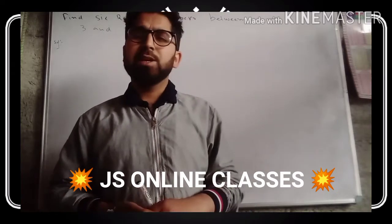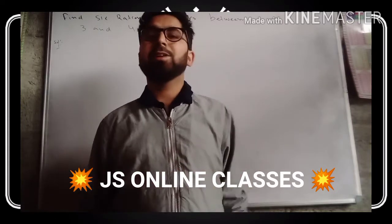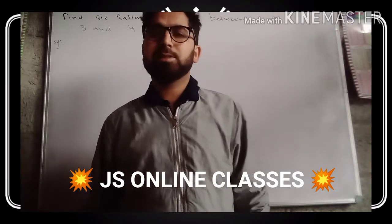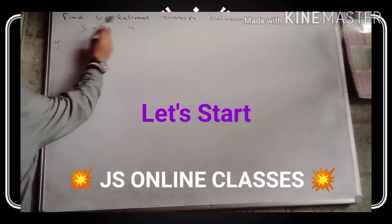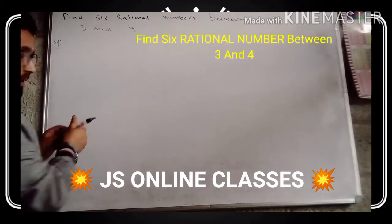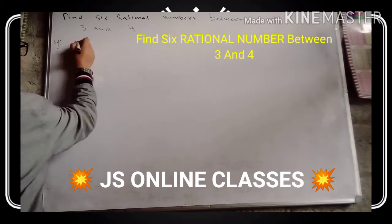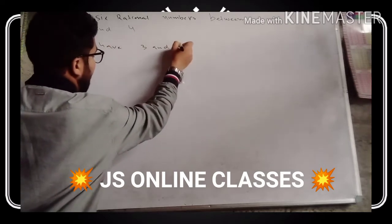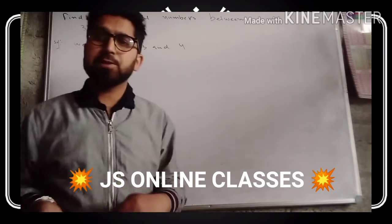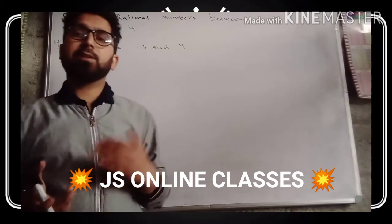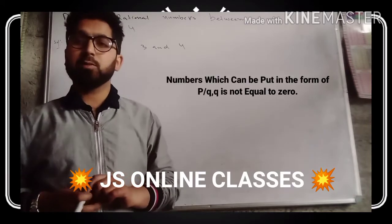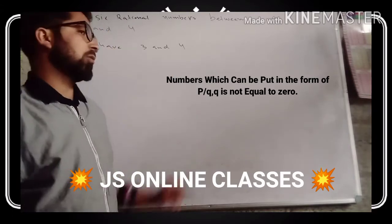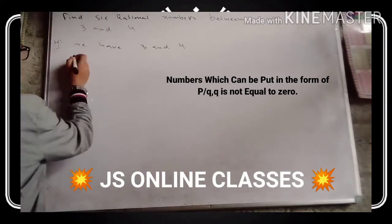As you all know, we can find infinitely many rational numbers between rational numbers, and here we have to find only six. First, we must know the definition of a rational number — a number which can be written in the form P divided by Q, where Q is not equal to zero and P and Q belong to integers. Here, three and four are both rational numbers.